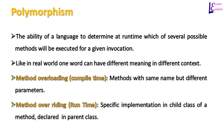Polymorphism in a programming language is the ability of a language to determine at runtime which of several possible methods will be executed for a given invocation or call. Like in the real world, one word can have a different meaning in different contexts — polymorphism works the same way. For example, the word "right" means the direction opposite to left, but it can also mean correct.